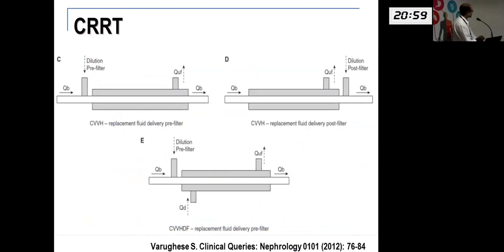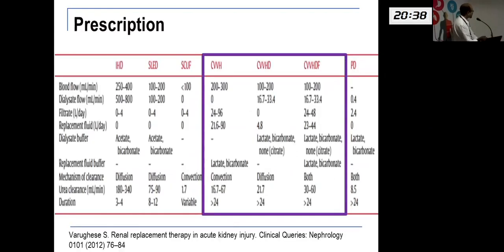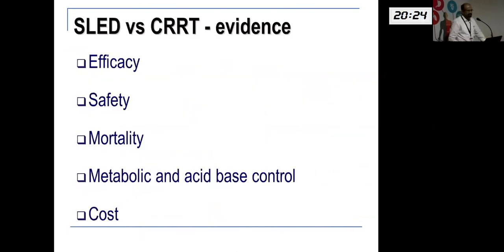Coming to CRRT circuits: if doing hemofiltration, because we're dragging out a lot of fluid, we need to replace the fluid either before or after the filter. In CVVHDF, we are doing both dialysis diffusion and solvent drag together. The blood flow rates are slower, but the dialysis flow rates are very, very slow. So the advantage is very slow dialysis flow, but we need to substitute a large amount of fluid. We can compare CRRT and SLED in terms of efficacy, safety, mortality, metabolic and acid-base control, and cost.